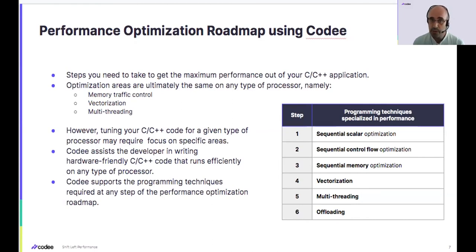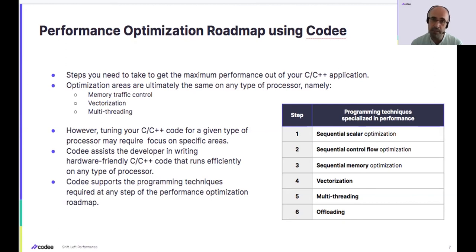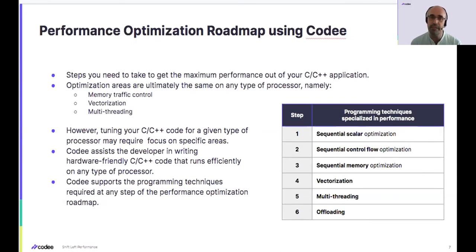Sequential optimizations — steps one, two, and three — are important for sequential code, for code that is already multi-threaded, for MPI code, and also important for GPU: all threads executed on GPU cores also need simple control flows and efficient memory usage. Once these optimizations are made, it is recommended to go to steps four, five, and six: vectorization, multi-threading, and offloading to GPUs. Offloading to the GPU is very challenging and typically requires addressing programming challenges from steps one through five.